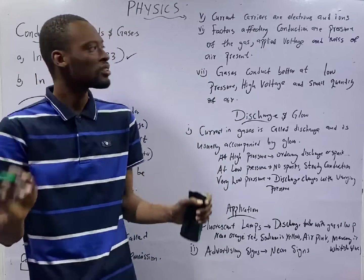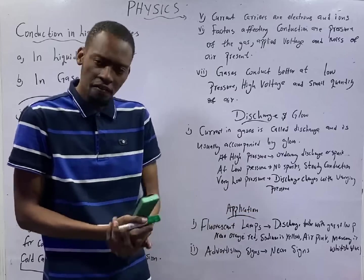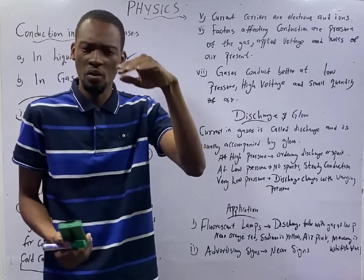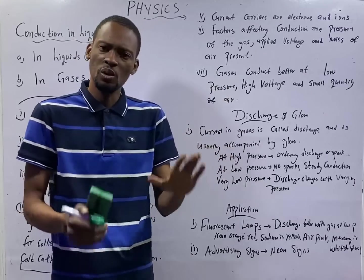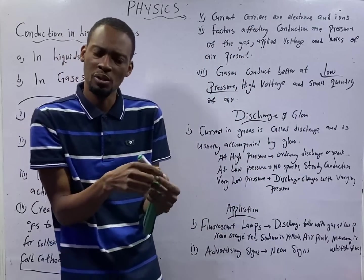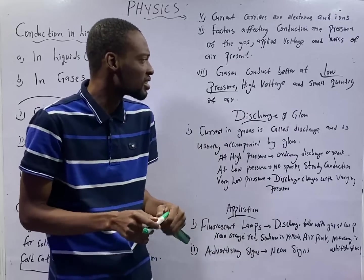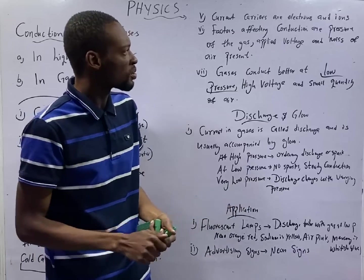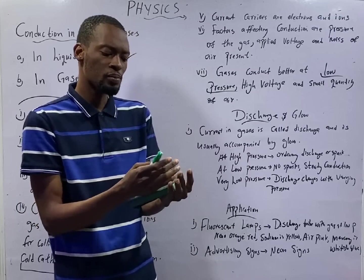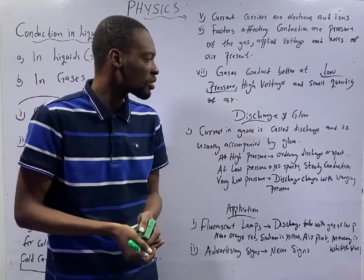Number four: The current carriers in gases are electrons and ions. And the factors affecting conduction in gases are pressure, the voltage you apply, and the mass of air present. Gases conduct better at low pressure and high voltage. You may be asked at what condition does gas conduct better? Number five: When the pressure is low and when the voltage is very high and in the presence of small quantity of air. The three factors affecting conduction in gases are pressure, voltage, and the presence of air. When the voltage is high, the pressure is low, and you have small quantity of air, gases will conduct better.